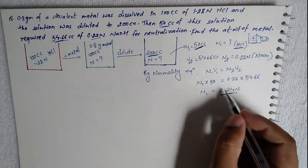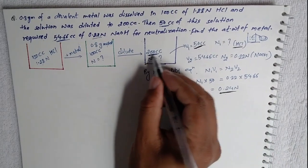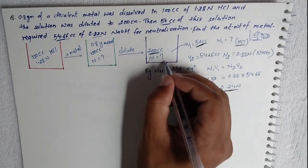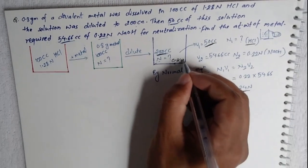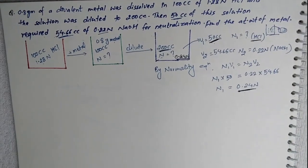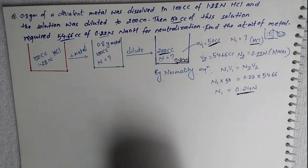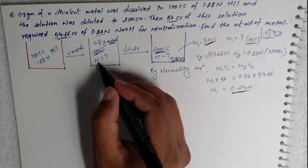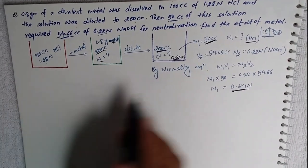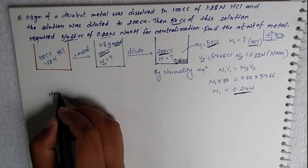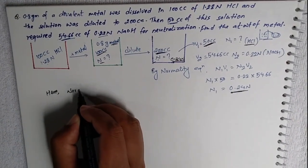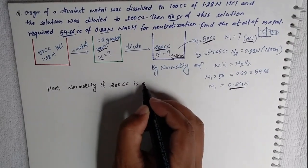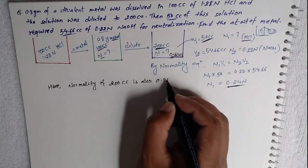Since concentration is uniform throughout, the normality of the full 200 cc solution is also 0.24 N.